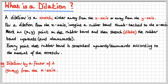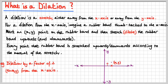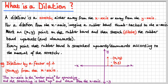If you consider a dilation of a factor of 2 away from the x-axis, there's a point at (x, y) and we're going to stretch that by a factor of 2. The x-axis is the anchor point for stretching, and the stretching is both up and down from the x-axis — upwards and downwards from the x-axis, both of them.